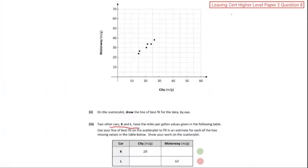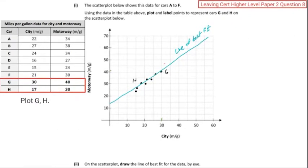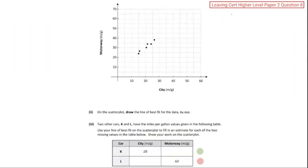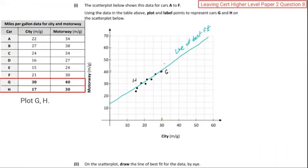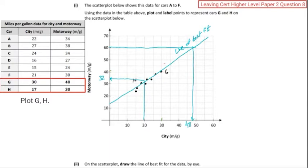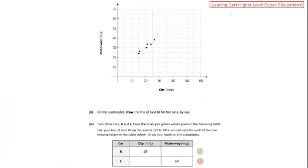Two other cars, K and L, have similar miles per gallon. We're going to use the line of best fit to find the second component. The 20 will be from the city side — we've got to find the motorway side. So if we go up from 20 and then go across, the motorway would be about 32. And the other one: 60 across for the motorway gives approximately 48. So we have 32 and 48.